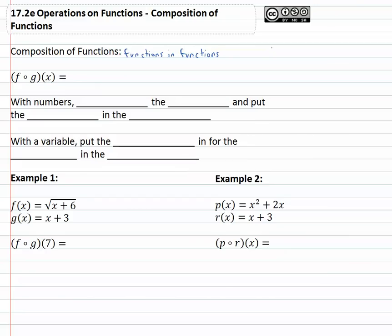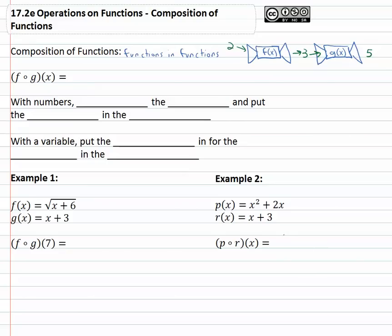Visually, what this means is we'll have some function machine here, which we'll call f of x, and then another function machine lined up next to it, which we'll call g of x. The idea is we plug a number — say two — into f of x, we get three out, and that three is immediately put into the next function, and maybe we get five out. That's the idea of a super function machine that does both. When you put two in, it jumps right to the final answer of five. The notation we use for this is f of g of x.